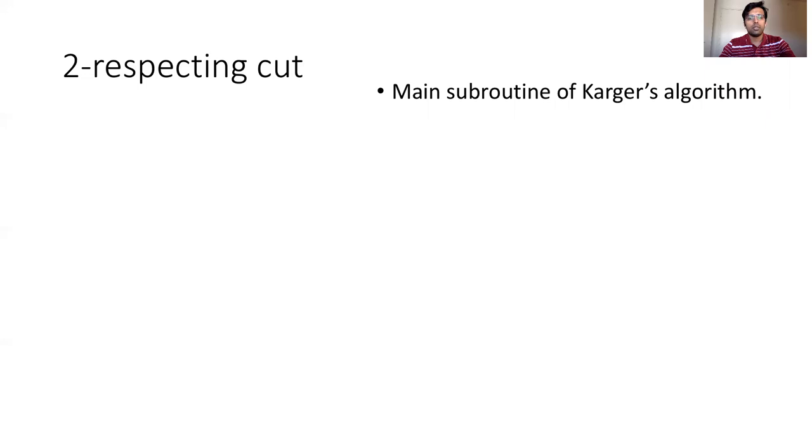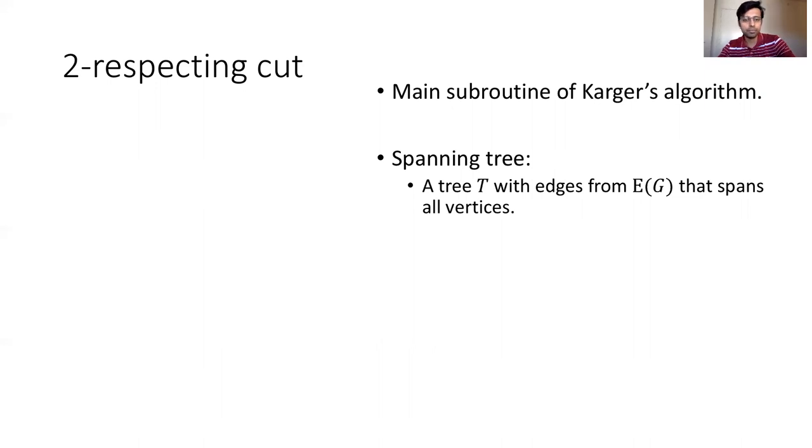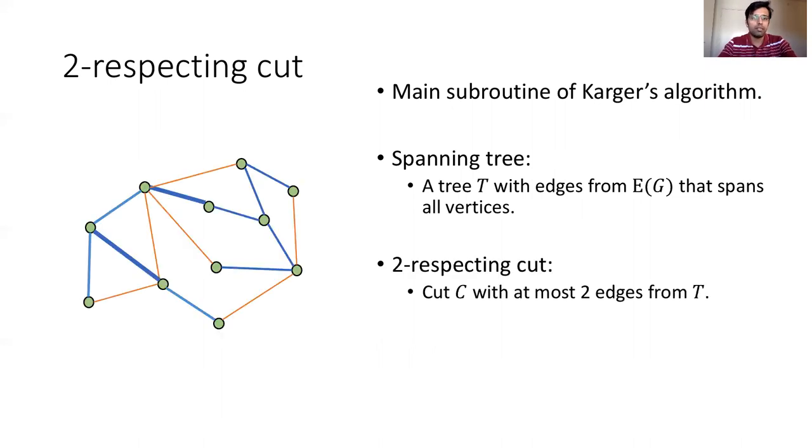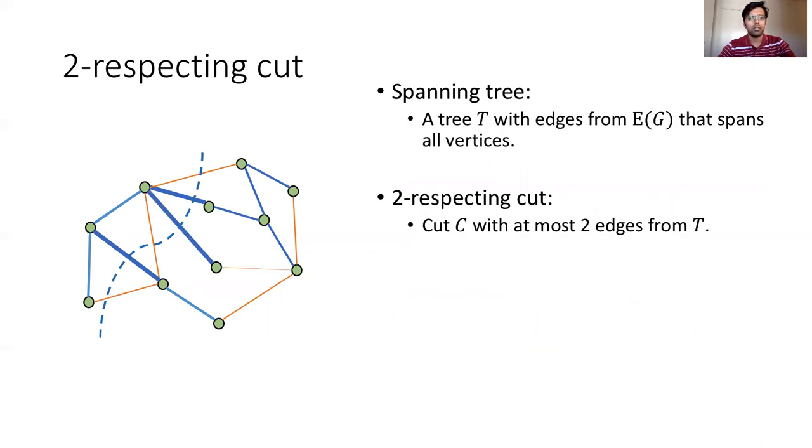The answer is a subroutine in Karger's framework which deals with tree respecting cuts. The tree respecting cut is defined with respect to a spanning tree T of graph G. A cut is tree respecting if at most two edges from the spanning tree T participate in the particular cut. In the figure, the fat blue edges are the edges of the spanning tree. It is easy to check that the dashed blue cut tree respects the spanning tree. On the other hand, the same cut does not tree respect this spanning tree, which now has three edges from the cut.